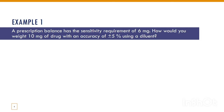First example: sensitivity requirement is 6 mg, the amount of drug to weigh is 10 mg, and the accuracy is 5%. Step 1 — calculation of the minimum weighable quantity: 6 mg divided by 0.05 gives 120 mg. Step 2 is the calculation of the dilution and the amount of diluent.